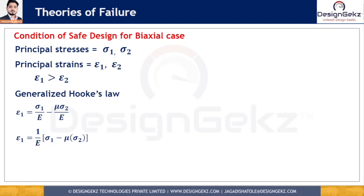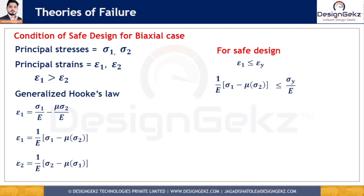Similarly, for epsilon 2, the equation is: epsilon 2 equals (1/E) times (sigma 2 minus mu times sigma 1). For safe design, epsilon 1 should be less than the yield strain, and the yield strain epsilon y can be written in terms of yield stress as sigma y divided by E.